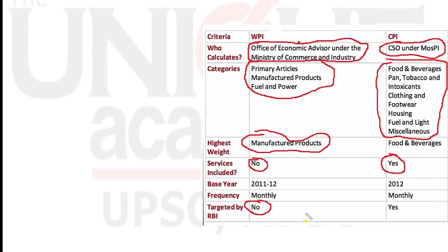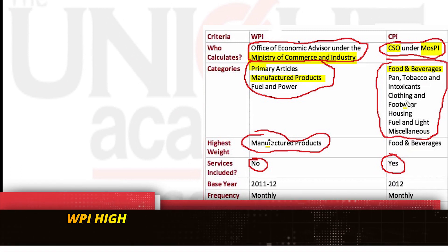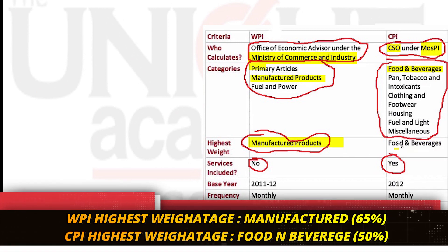WPI is released by the Ministry of Commerce and Industries. CPI is released by the CSO — Central Statistics Office — which comes under the Ministry of Statistics and Programme Implementation (MOSPI). The highest weightage in WPI is given to manufactured products, and the highest weightage in CPI is given to food and beverages.